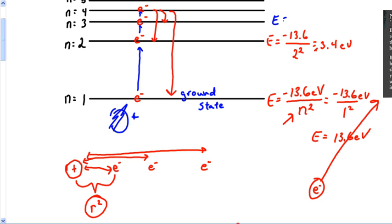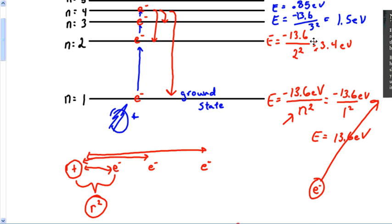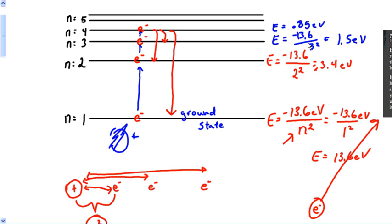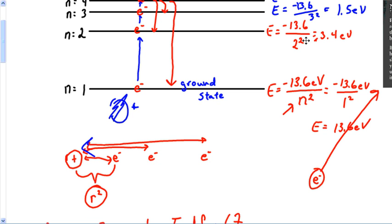By the time you get up to the third energy level, it's about negative 1.5 electron volts. Then by the time you get to the fourth energy level, it's down to about negative 0.85 electron volts. This energy diminishes greatly as you approach higher energy levels, and it all goes back to the decreased attraction between the electron and the nucleus.